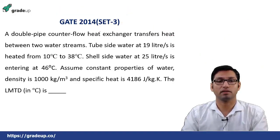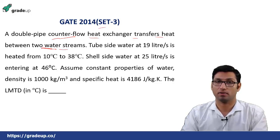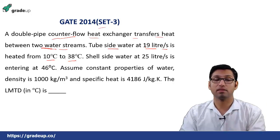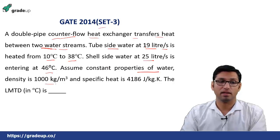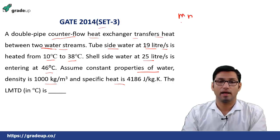The next question is from GATE 2014, Set 3. A double-pipe counter-flow heat exchanger transfers heat between two water streams. Tube-side water flows at 19 litres/s, heated from 10°C to 38°C — so cold water is in the tube. Shell-side water is at 25 litres/s, entering at 46°C. Mass flow rate of cold fluid = 0.019 m³/s and hot fluid = 0.025 m³/s. You need to find the LMTD.